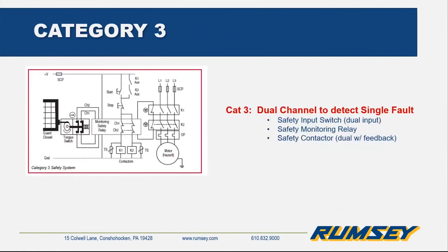Category three is probably the most common that people would build to, depending on the risk assessment. We see the same tongue switch, but it is dual channel on the input side, and also redundant contactors on the output side. You also see the feedback loop from the contactors going into the safety relay, so they can monitor that the contacts actually did open and close when they needed to. That relay with the dual channel on the input side now has a lot more diagnostic coverage and can handle at least one fault.